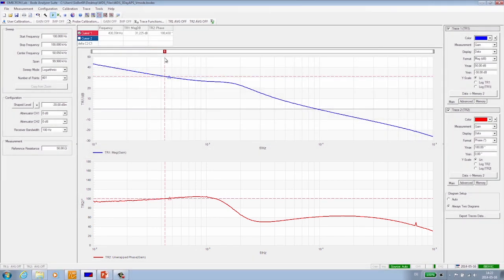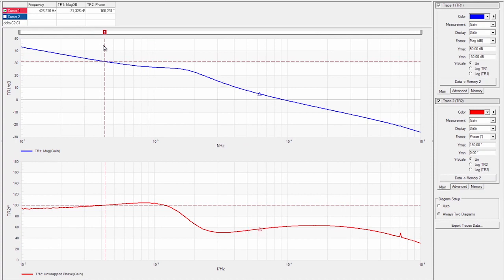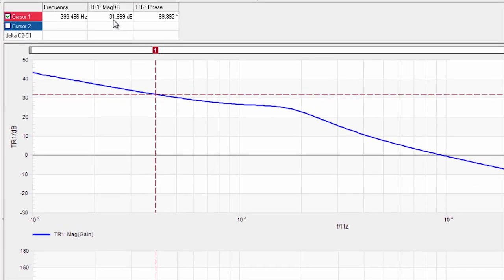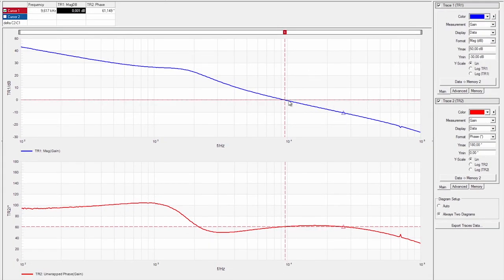With the cursor I can look at what my phase is at a certain frequency. I am interested in the crossover frequency. The crossover frequency happens at 0 dB, so if I type in 0 the cursor will automatically jump to the crossover frequency.